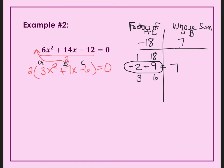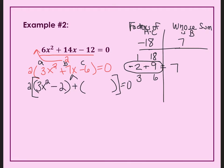Remember, those are not your answers — those are what I'm going to split my B into. So you keep your 2 on the outside; it's not going to be part of this. Your A stays the same, and your B is now split up into negative 2 and positive 9, then you bring down your negative 6. The A stays the same, the C stays the same, but I split the B so I could do factor by grouping.